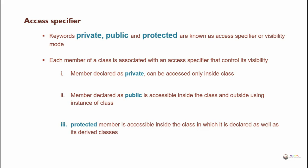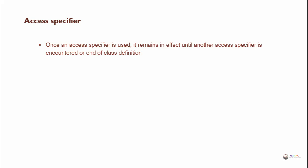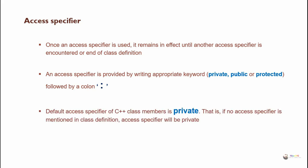Protected is accessible inside the class in which it is declared as well as its derived classes. Once an access specifier is used, it remains in effect until another access specifier is encountered or the end of the class definition. An access specifier is provided by writing the appropriate keyword — private, public, or protected — followed by a colon symbol. The default access specifier of a C++ class is private; if no access specifier is mentioned, it will be private.